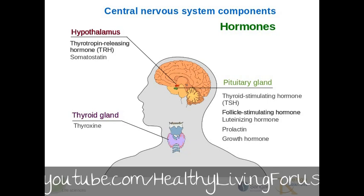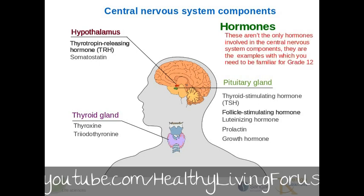The thyroid gland produces thyroxine, also known as T4, and triiodothyronine, also known as T3. These are not the only hormones involved in the central nervous system components of the endocrine system — they're examples. They're the examples you need to be familiar with for your grade 12 syllabus, and they're also among the more important and interesting components.